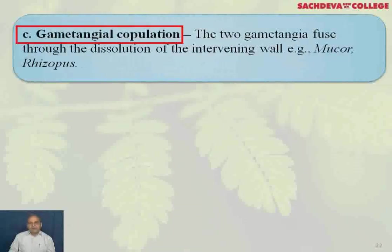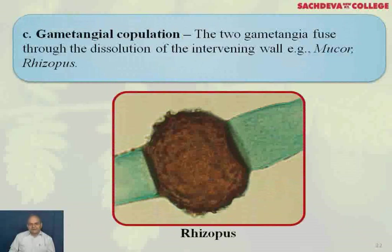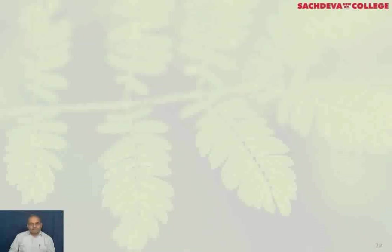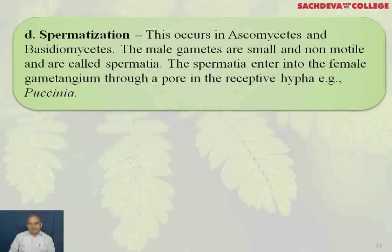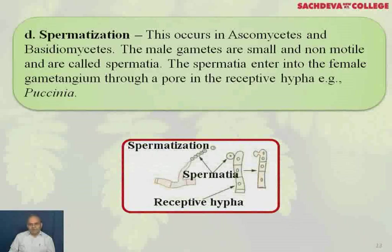Gametangial copulation: the two gametangia fuse through dissolution of the intervening wall (example: Mucor and Rhizopus). This shows the formation of the zygote spore in Rhizopus. Spermatization occurs in ascomycetes and basidiomycetes; the male gametes are small, non-motile, and called spermatia. The spermatia enter into the female gametangium through a pore in the receptive hypha (example: Puccinia).